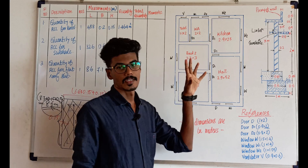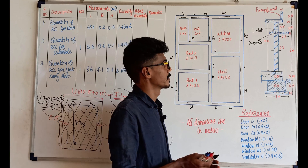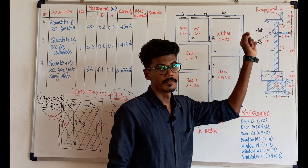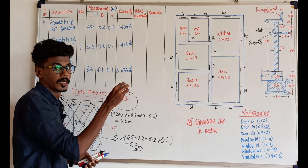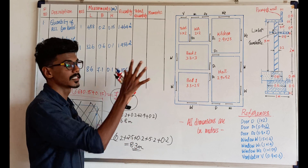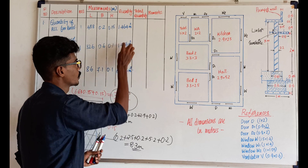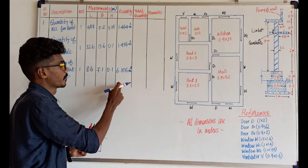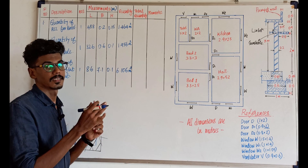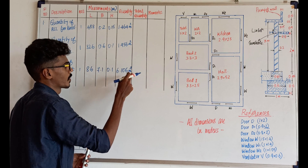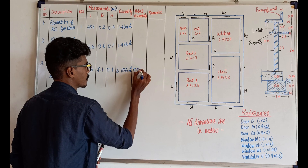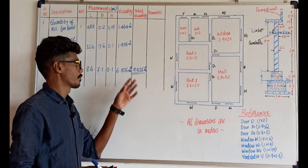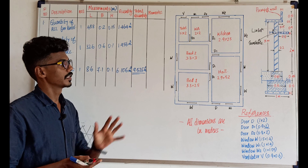If we have a building in our plan, we need concrete for Sunshade, Lintol, and Flat Roof Slab. So let's add these three values. The total quantity of RCC required for this building — we have a total of 9.526 m³. We can write total quantities: 9.526 m³ of RCC is required for this building.